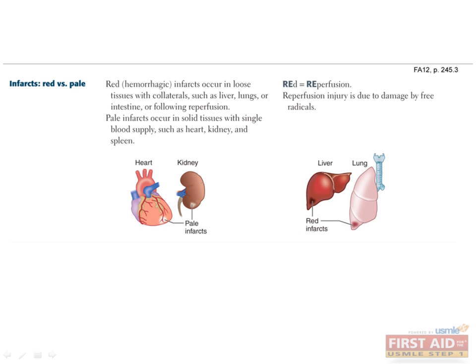Let's move on now to infarction, which is tissue death that results from complete ischemia. In gross specimens, infarction can either look red or pale depending on the organ type. If infarcted tissue can still receive blood via collaterals, the infarct will be red, or hemorrhagic. If the infarcted tissue doesn't have any collaterals, it will be pale. One important thing to keep in mind is that myocardial infarctions, which are normally pale, can sometimes appear red because they were reperfused during treatment. This restores blood flow — hence the red color — but the reperfusion can also cause free radical damage to the tissue.